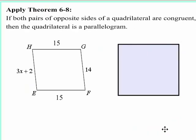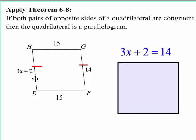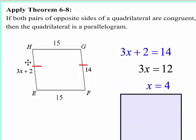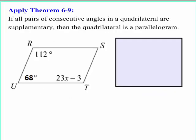Let's apply all this. Theorem 6-8 states that if the opposite sides are congruent to each other, then it's a parallelogram. Clearly 15 and 15 — that pair of opposite sides are congruent. The next question is: what value of x makes these two opposite sides congruent? You set 3x + 2 equal to 14, subtract 2 from each side, and divide by 3. So x has to be 4 for this to be a parallelogram.